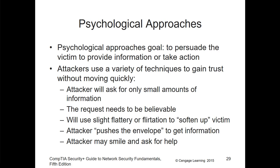Attackers use a variety of techniques to gain trust — sometimes this is a long-term endeavor, not short-term. Attackers will ask for small amounts of information at first. The request needs to be believable. You can use slight flattery or flirtation to soften up the victim. You could drop names of key figures — maybe you're their assistant and need access to someone's office. You can always push a little to see what you can get access to, or the attacker may simply smile and ask for help.